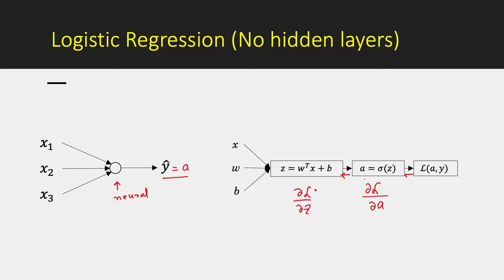We also do a backward gradient computation where we calculate del_L/del_a — how loss changes when we change a — and then we compute del_L/del_z, how loss changes when we change z. This is used to calculate del_L/del_w and del_L/del_b, showing how loss changes with respect to weights and bias, and based on that we update our weights and bias, repeating the process.